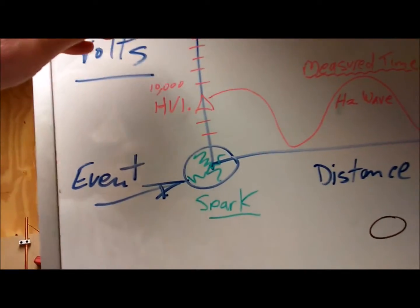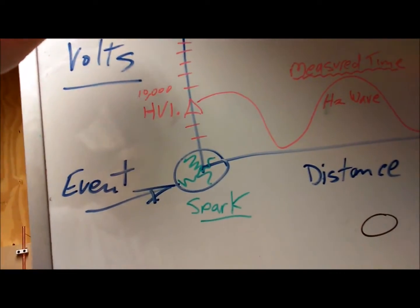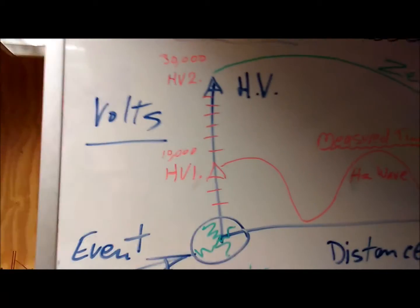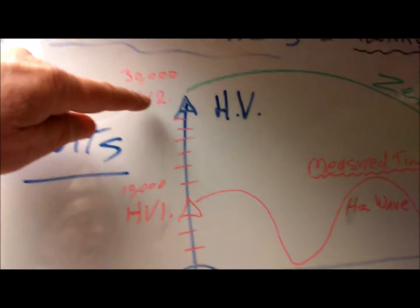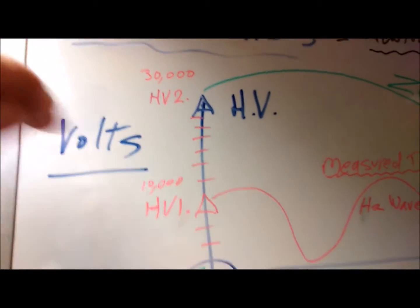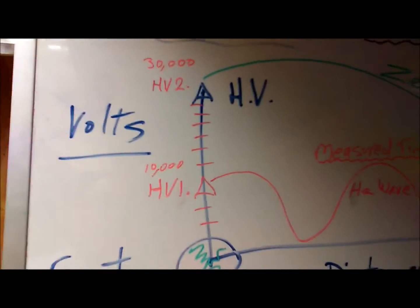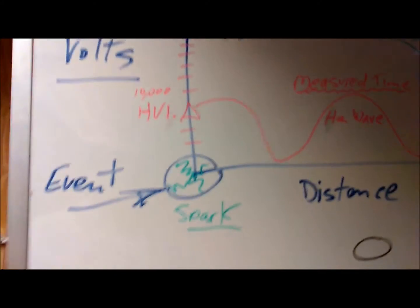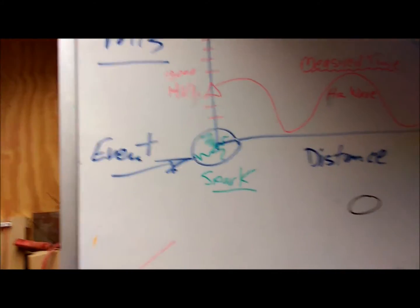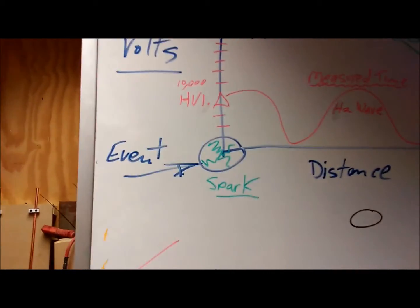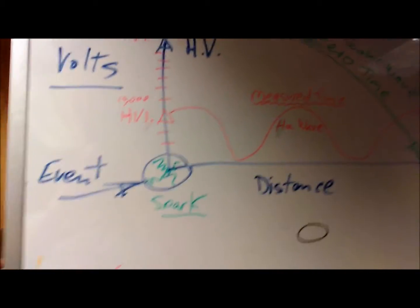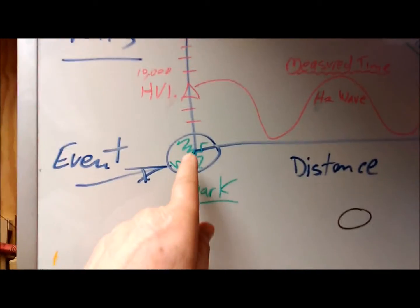But if you go for a bigger spark — a bigger impact, if you like — then it goes to a scalar wave, which is a different type of wave. This higher voltage here, 30,000 volts, produces a scalar wave. It's a bit hard to get your head around, but I understand it more each day.